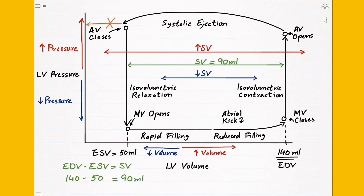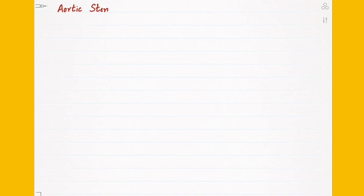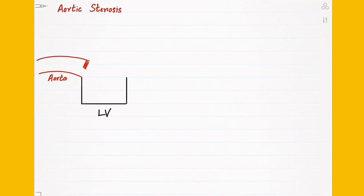That's it for a normal pressure volume loop. Now let's see some conditions that affect the cardiac cycle and change the shape of the loop. We'll start with aortic stenosis, where we have a stiff aortic valve that's very hard to open.